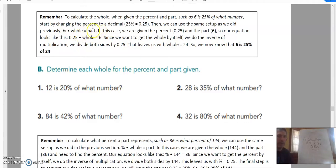Instead of finding the part, we know the part. What we're going to be looking for is the whole. So we are given the percent, 0.25, and the part, 6. So our equation looks like this: 0.25 times the whole, which we don't know, equals 6.